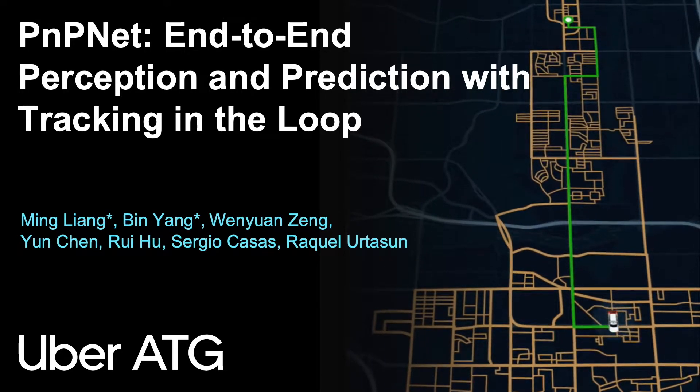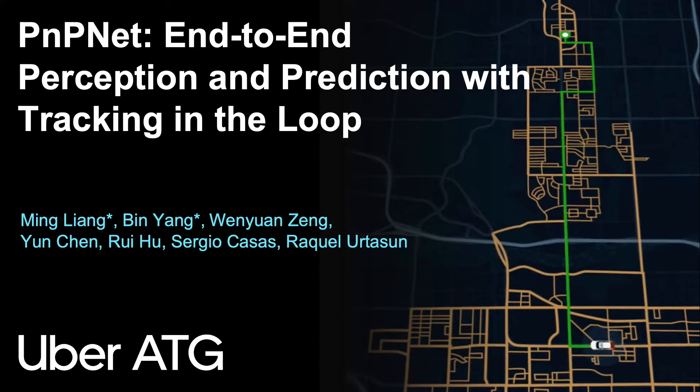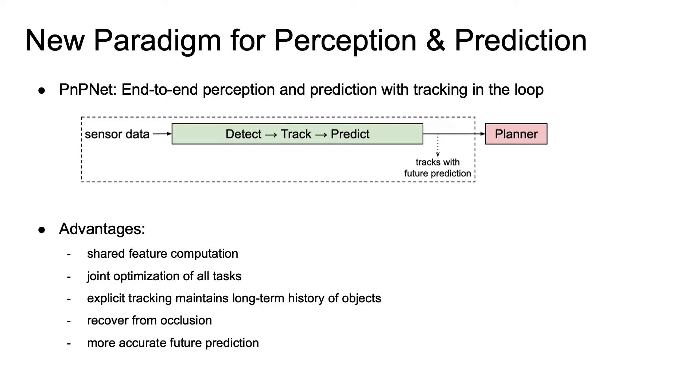PNP-NET is a new paradigm for joint perception and prediction that explicitly performs object tracking. PNP-NET runs in real-time, fully exploits temporal context, and results in more accurate predictions.